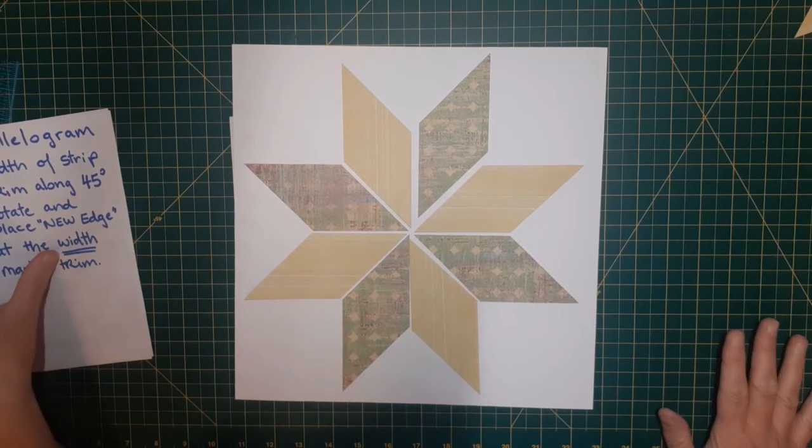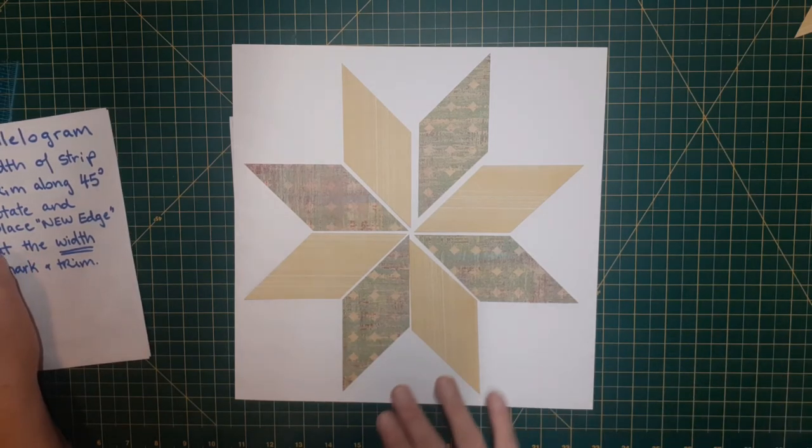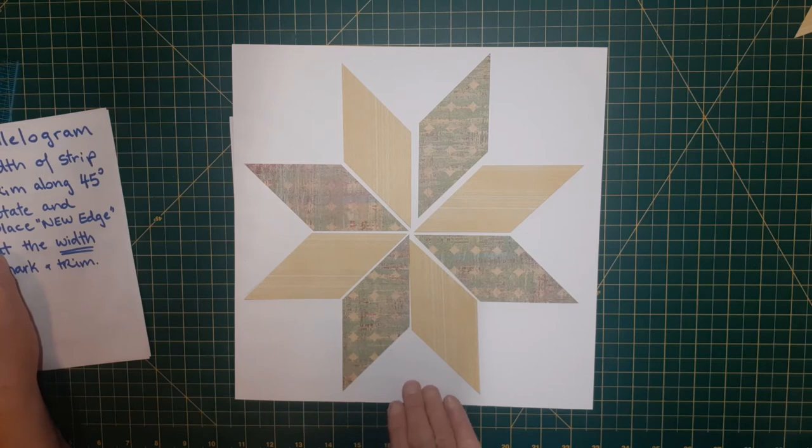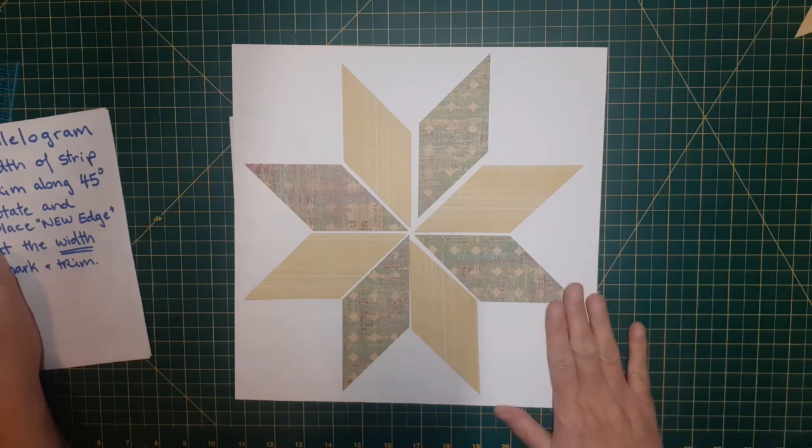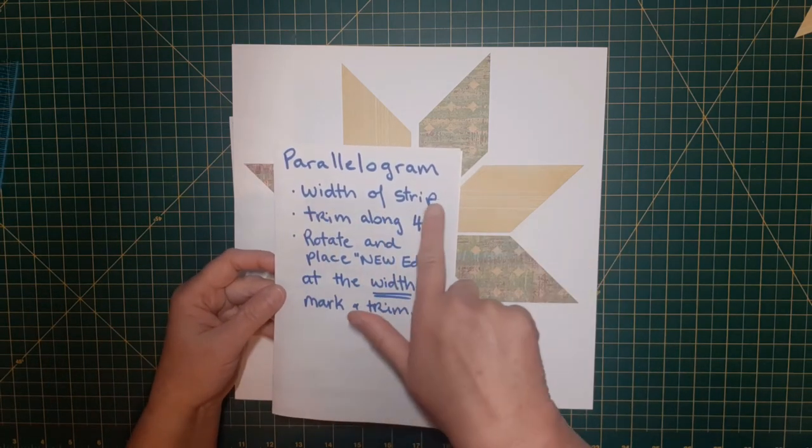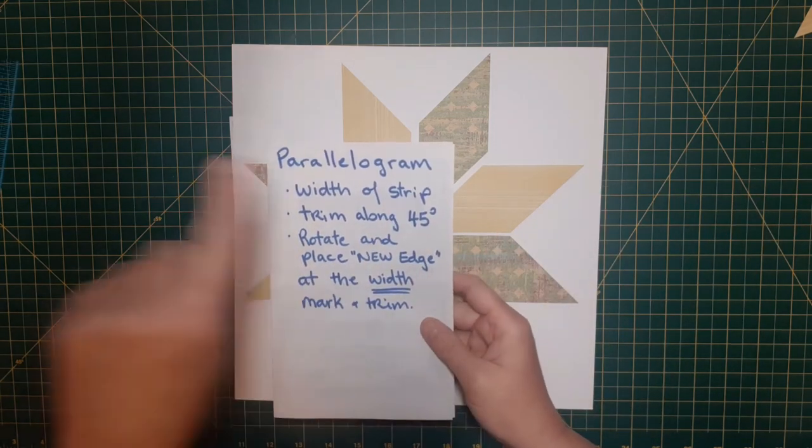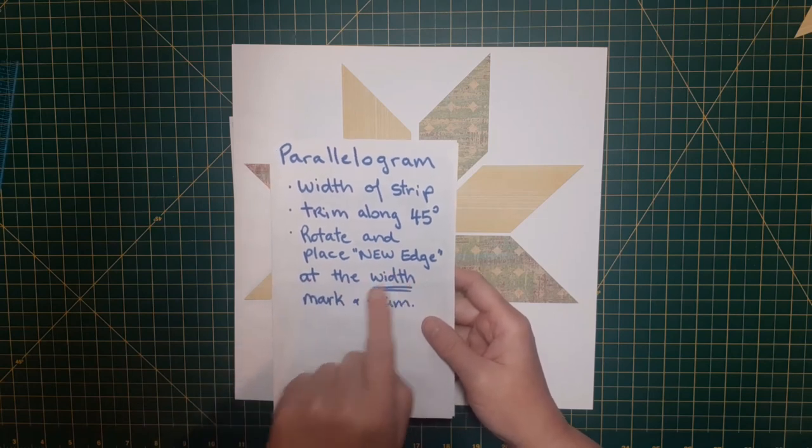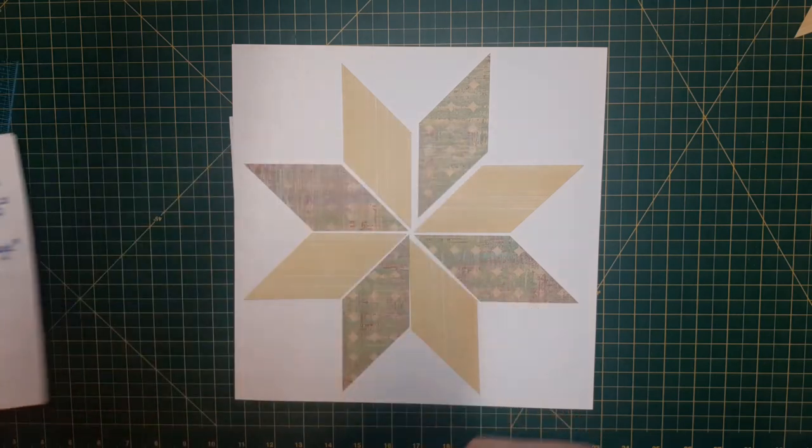So don't forget as a scrapbooker, once you know this technique for creating your own parallelograms, you don't have to make it this size for your page. You can just change the width of your strip and rotate it and do all your trimming and do some other variations. So don't forget. So for your parallelogram, whatever the width of your strip is, you're going to trim it along the 45 degrees to get your angle. Then you're going to rotate it and place that new edge you've created at the width mark. And then you'll just keep trimming again to make your eight pieces.